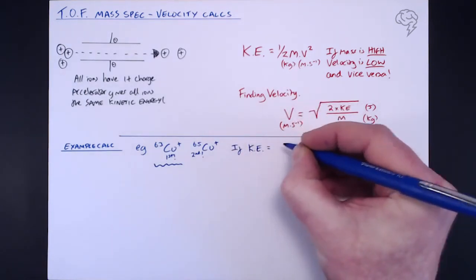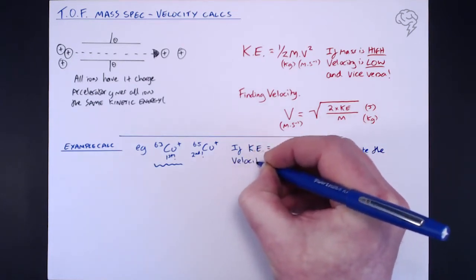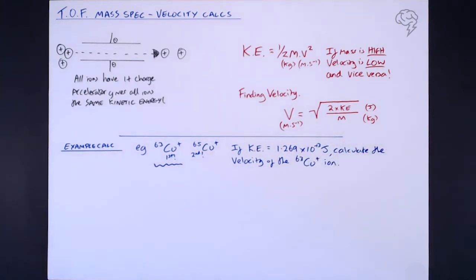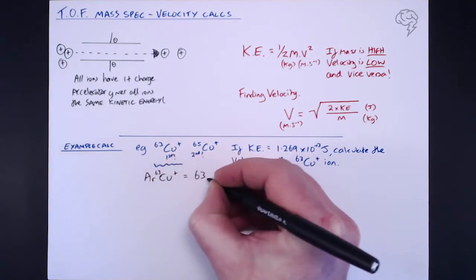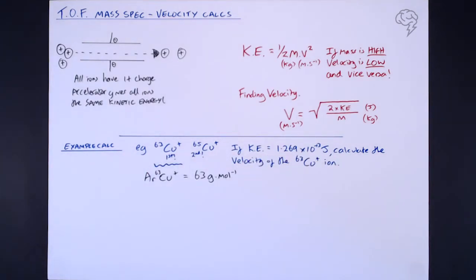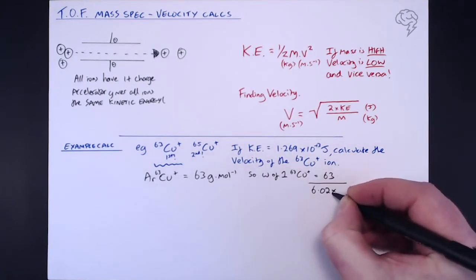Let's say we're asked to find the velocity of our ⁶³Cu⁺ isotope. If we're given the kinetic energy as 1.269 × 10⁻¹³ joules, we need to calculate the velocity of the Cu-63-plus ion. Before we plug numbers into the velocity equation, we first need the mass of a single ion in kilograms. Our ⁶³Cu⁺ ion has a relative atomic mass of 63 grams per mole — meaning one mole of those ions weighs 63 grams. To find the mass of one single Cu⁺ ion, we divide by Avogadro's constant, because that's how many ions are in one mole.